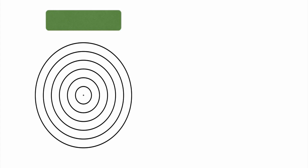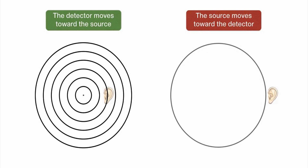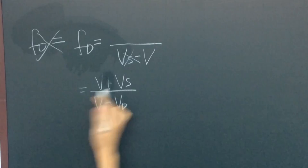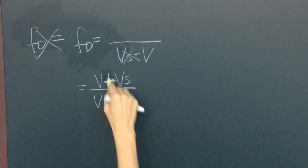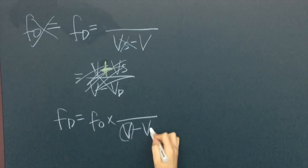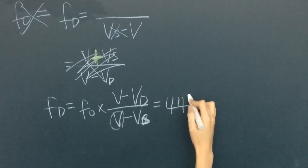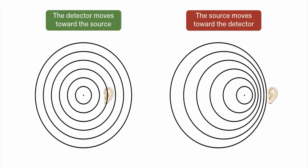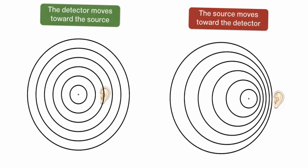Teacher! The change of pitch of sound due to the relative motion between source and detector is the Doppler effect. I can understand the effect but the calculation is always confusing. Is there any easier method? Of course there is. Let's solve this by using the graphical method.